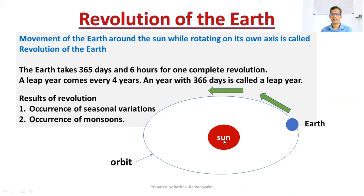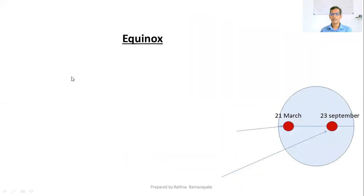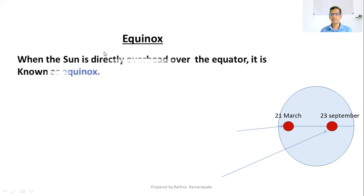The movement of the Earth around the Sun while rotating on its own axis is called revolution. Now let's see what is equinox. When the Sun is directly overhead over the equator, it is known as equinox.